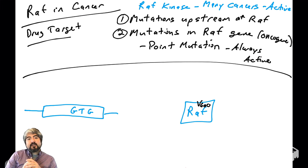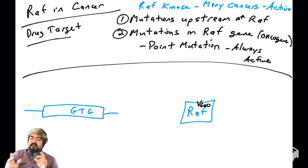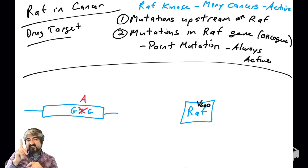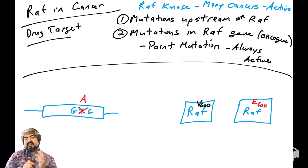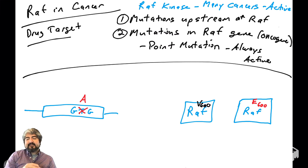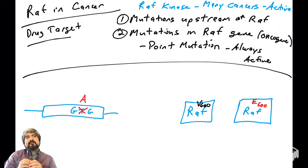The codon in the RAF gene that codes for this valine is GTG — if you look up the genetic code table, GTG codes for valine. In some human cancers, that T in the middle of that codon is mutated to an A. This one nucleotide change leads to one amino acid change in RAF: instead of a valine at position 600, it becomes a glutamic acid at position 600. Glutamic acid is large and negatively charged, while valine is very small and hydrophobic — they are very different amino acids. This change in one amino acid disrupts RAF's conformation.